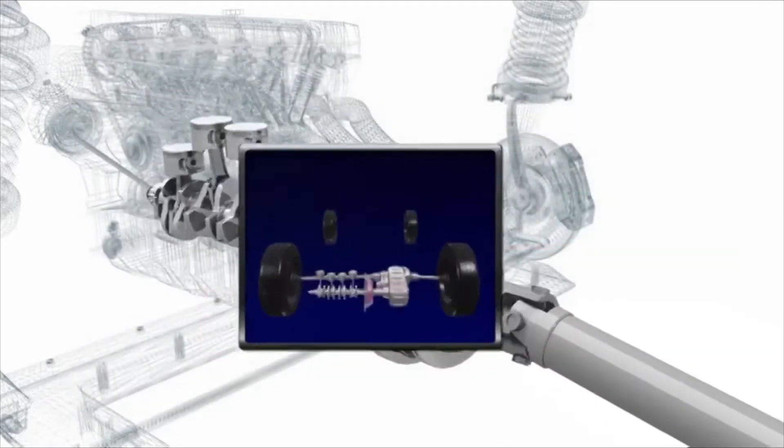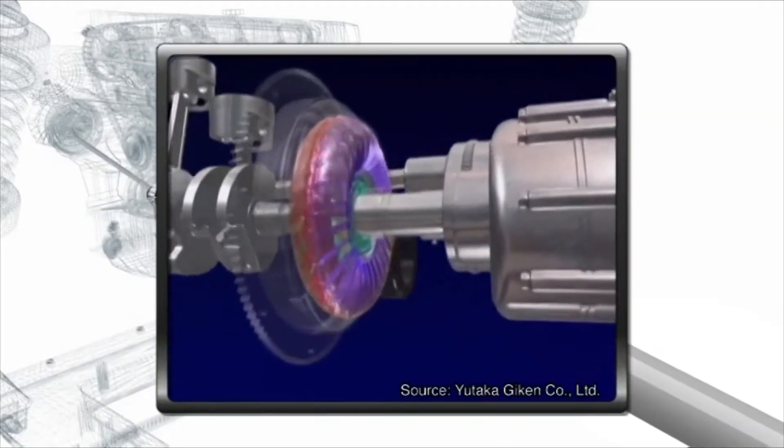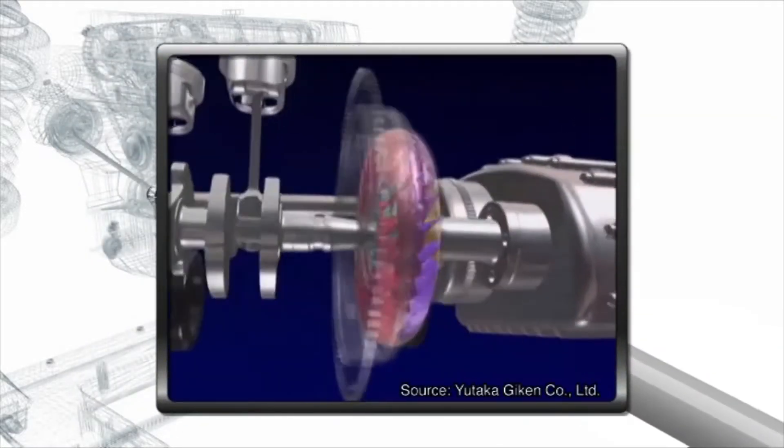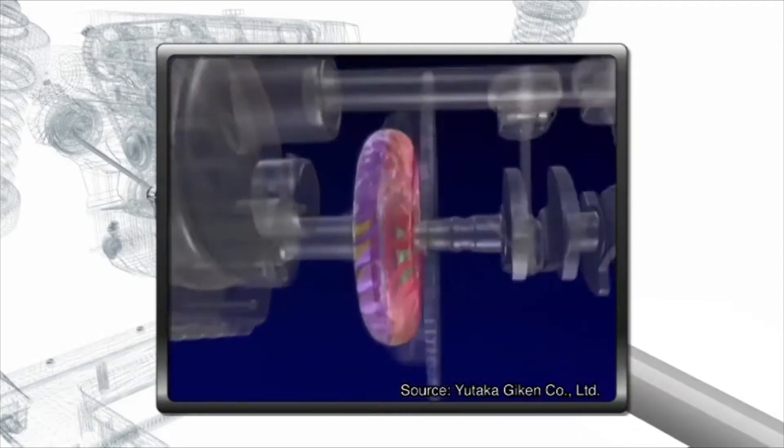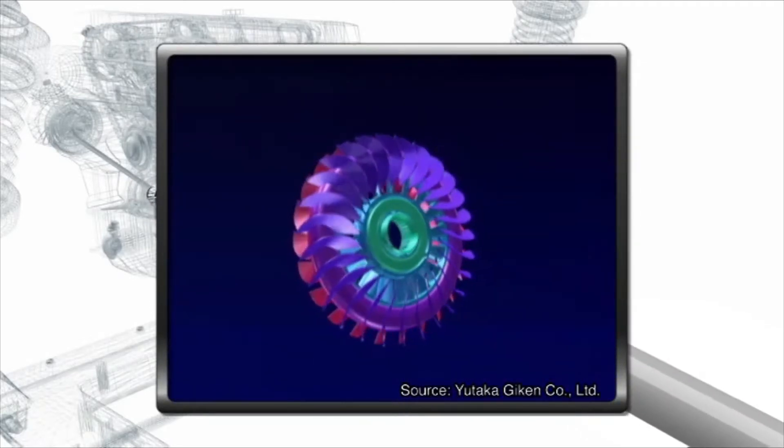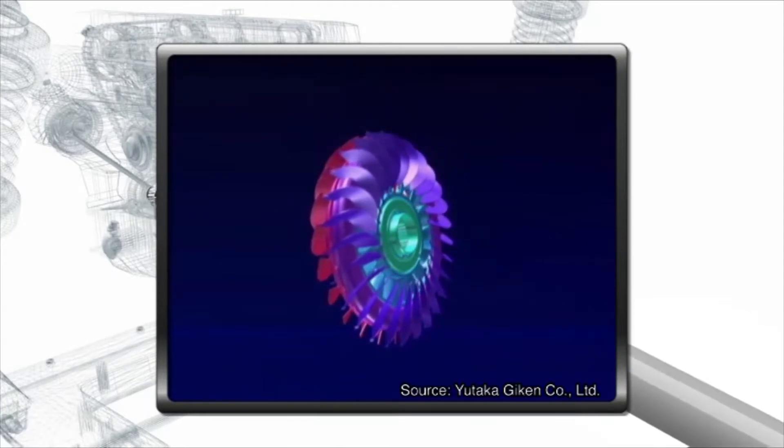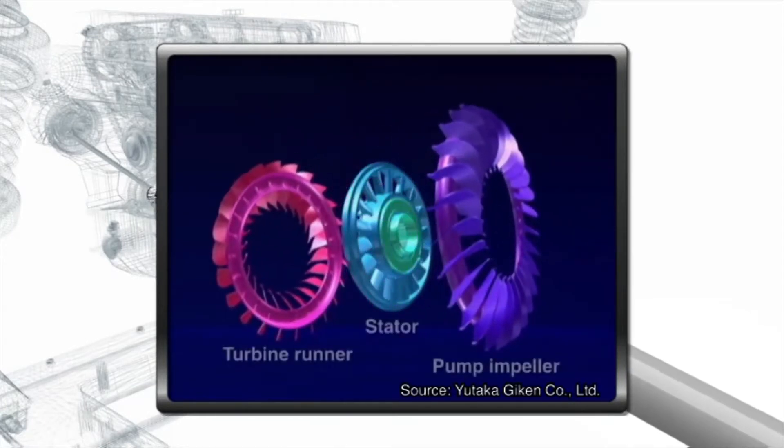The torque converter uses the same principles as fluid couplings. Inside a housing filled with oil, the pump impeller rotates and pushes out the fluid. The force of the fluid then turns the turbine runner that drives the gears behind it.